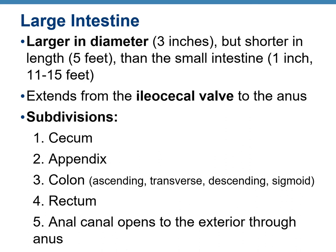The length of the large intestine is 5 feet, whereas the small intestine was 11 to 15 feet. It starts from the ileocecal valve, present at the junction between the small intestine and large intestine, and goes all the way to the anus. Subdivisions include the cecum, appendix, colon (ascending, transverse, descending, and sigmoid), rectum, and the anal canal opening to the exterior through the anus.